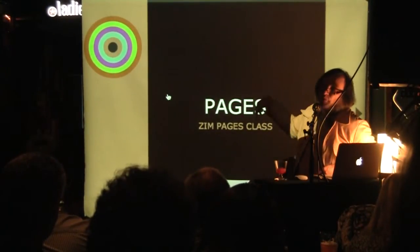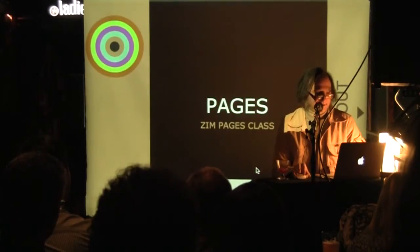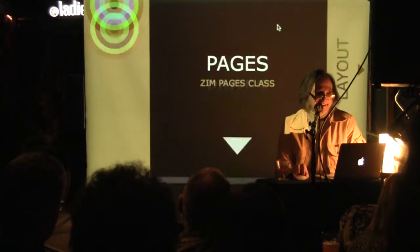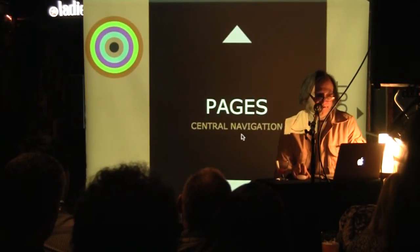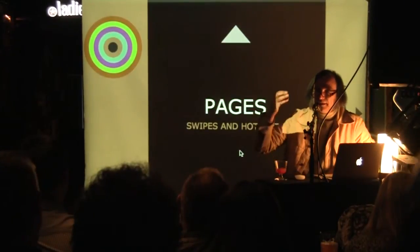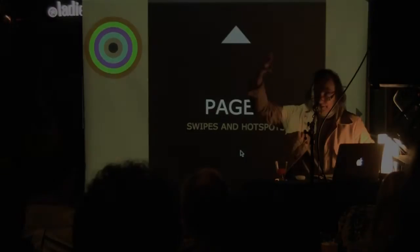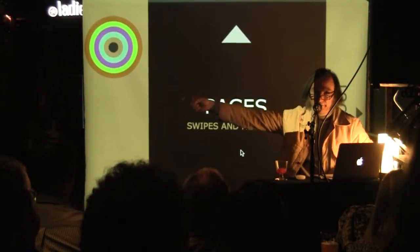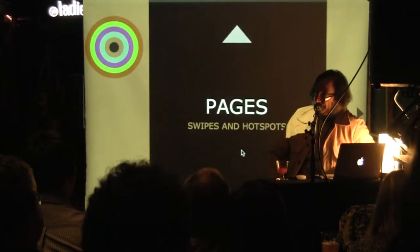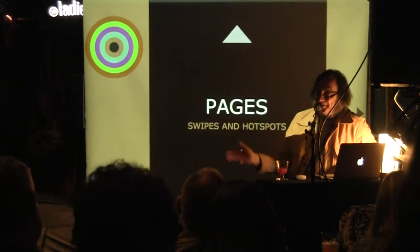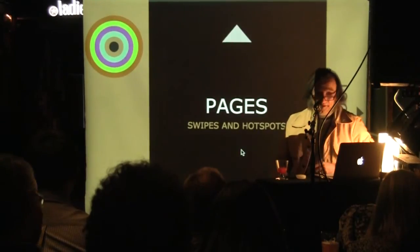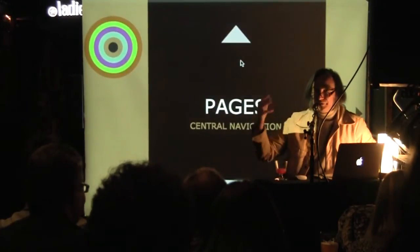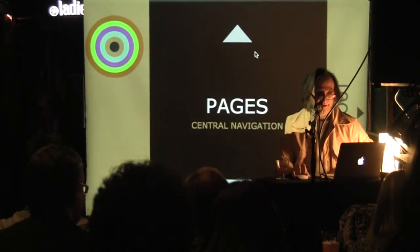This is for mobile apps. Here's the pages example — as I swipe, it goes from one page to another. The pages module handles multiple pages: what are your pages, and if you go up, left, right, or down, which page do you want to go to? It handles all the swipes automatically. You can also hook in hotspots, so all your interface and navigation is done in one place.